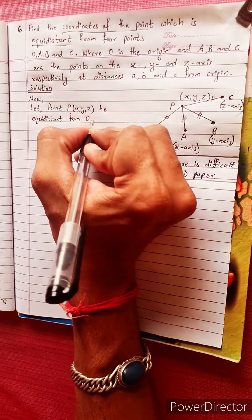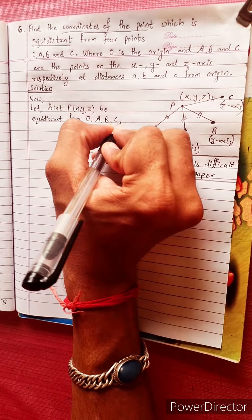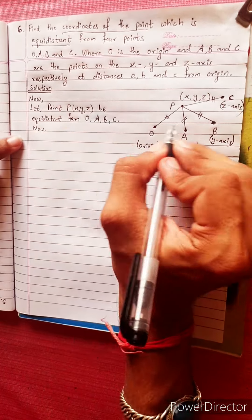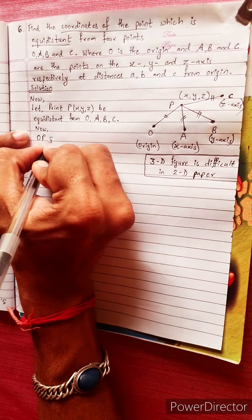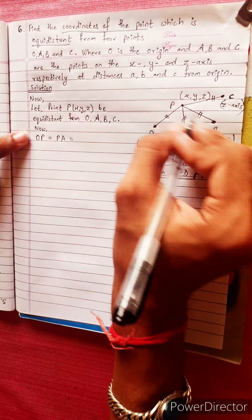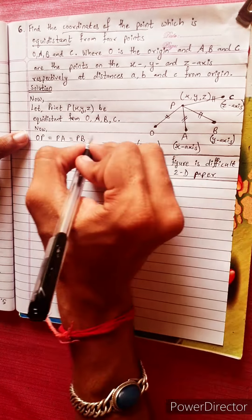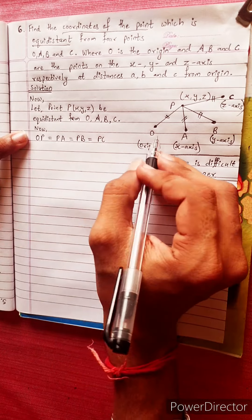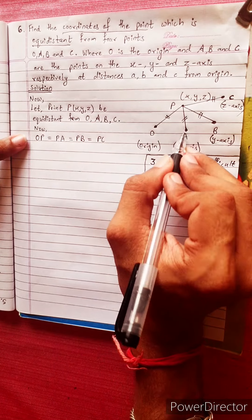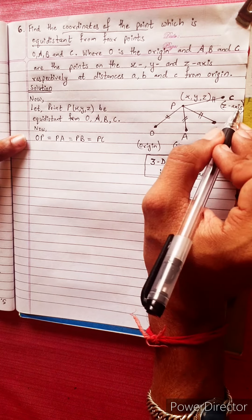The origin is equal to point A, point B, and C. The figure shows OP equals PA, equals PB, equals PC — the point is equidistant. The axes are the X axis, Y axis, and Z axis.